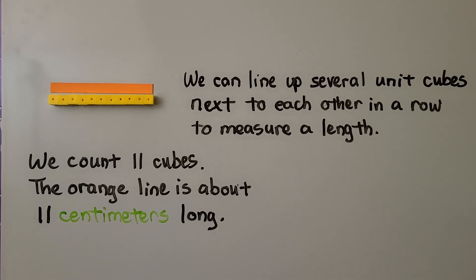We can line up several unit cubes next to each other in a row to measure a length. We can count one, two, three, four, five, six, seven, eight, nine, ten, eleven unit cubes. So the orange line is about 11 centimeters long.